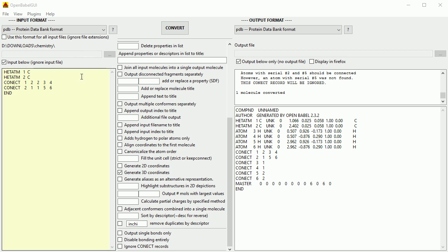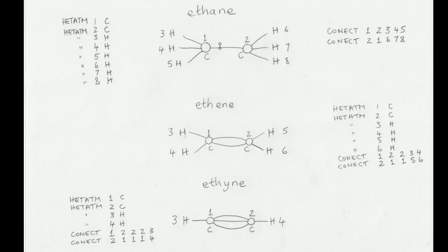In part one of this tutorial, I typed in a few lines and used OpenBabel to generate 3D coordinates of six atoms that make up an ethene molecule — two carbon and four hydrogen atoms. And I imported the 3D data into Blender to make a model of the ethene molecule.